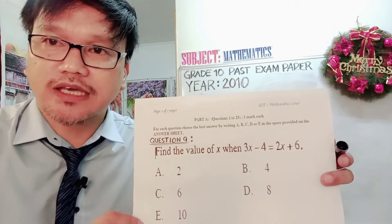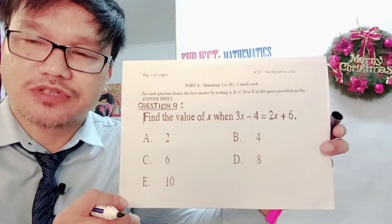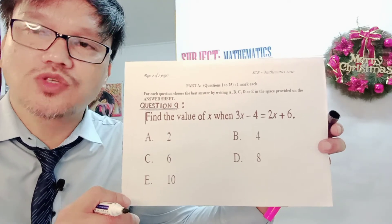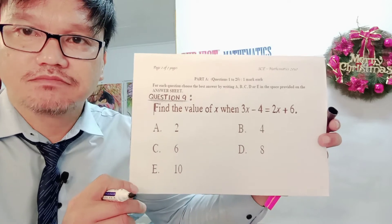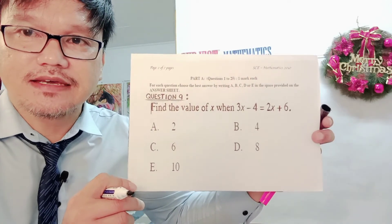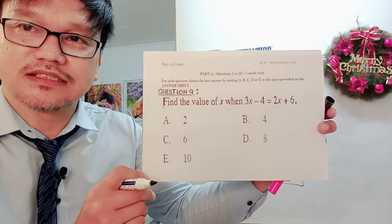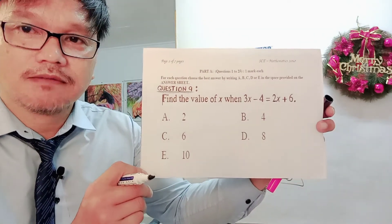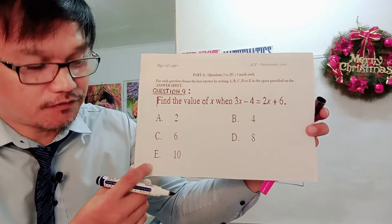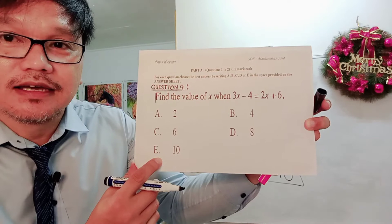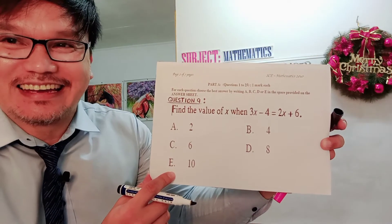After working it out in your rough paper, go back to the question and find which option gives you the value of X — A, B, C, D, and E. As we can see, letter E gives us the value X equals 10. Therefore, the correct answer is letter E for question number 9.